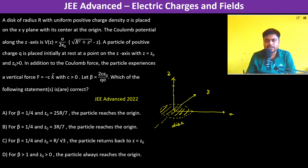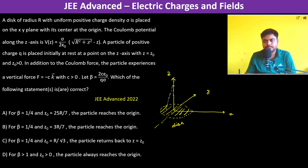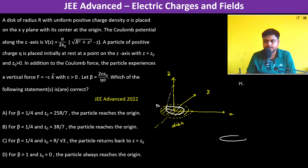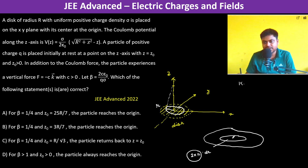Let us calculate what is the potential at the z-axis. We take a circle of radius small r — the disk is of radius R — so the area of this elemental ring is 2πr dr.